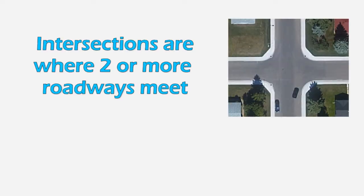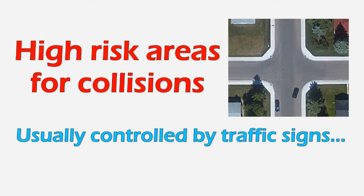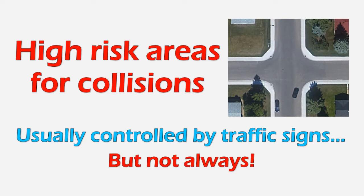An intersection is an area where two or more roadways meet. Therefore, there might be potential conflict between other road users such as vehicles and pedestrians. Because of that, intersections are high risk areas for collisions, and they are usually controlled by traffic signs, but not always.